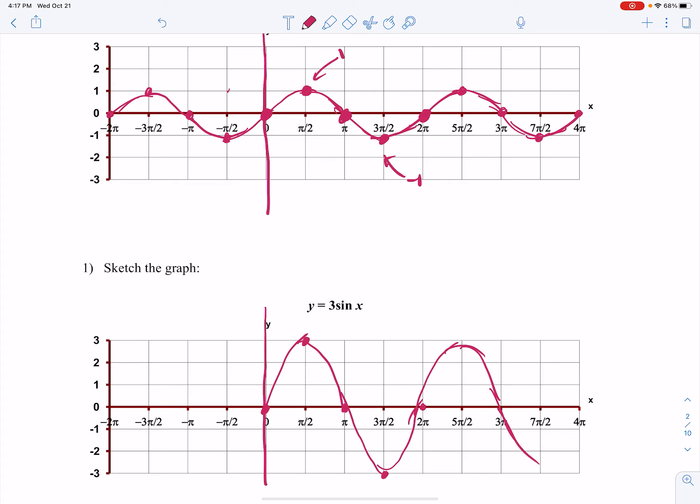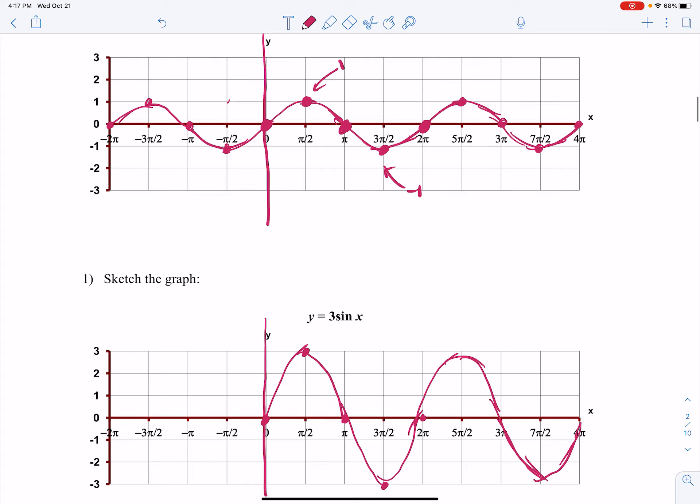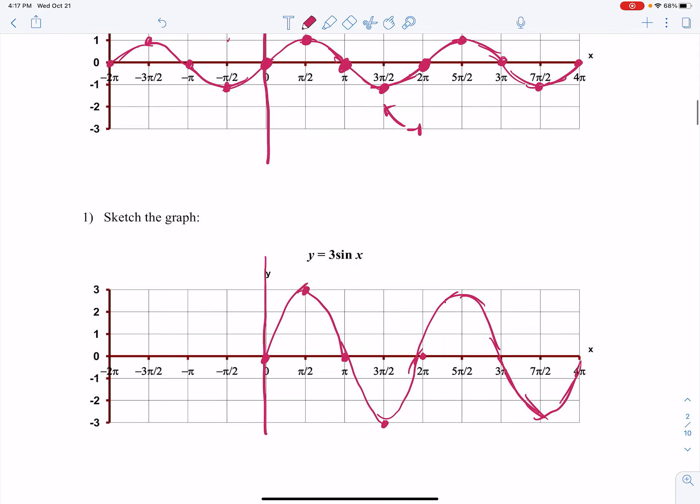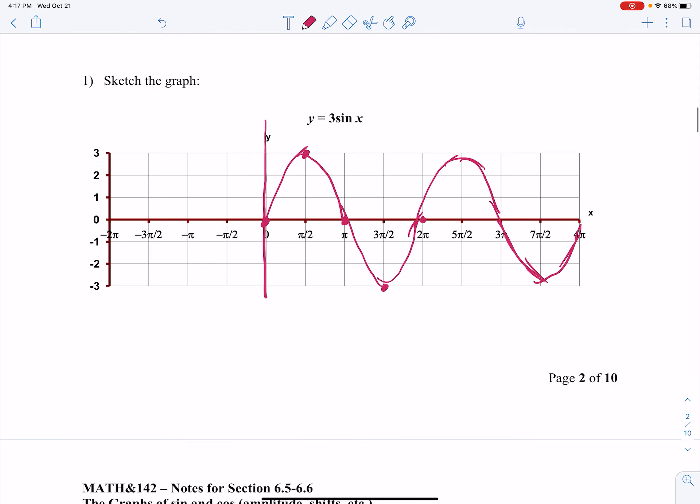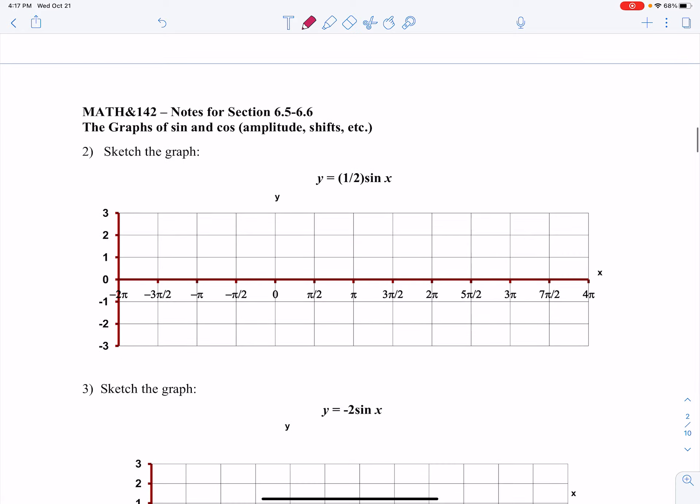So here is what the graph of 3 sine of x looks like in comparison to just regular sine of x. So the question is, what does that number out in front of the sine graph do? So I want to look at this. This 3 here means that this max value is 3, and that min value is negative 3. I wonder if that has any special significance. Let's talk about it after our next example here.